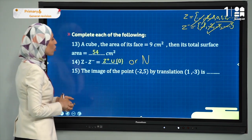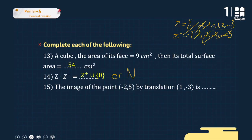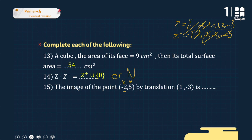Exercise fifteen: find the image of point (-2, 5) by translation (1, -3). The rule is: image = point + translation, matching x with x and y with y. So: x = -2 + 1 = -1, and y = 5 + (-3) = 2. The image is (-1, 2).